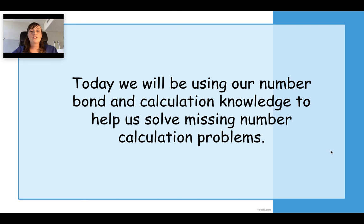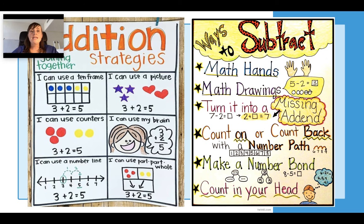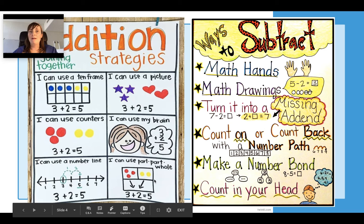Today we're going to be using our number knowledge, number bond knowledge, and calculation knowledge - different ways that we can add and subtract to help us solve problems. So here are the posters similar to the ones I made in class that we always talk about when we do addition or subtraction. When we're adding, we're putting groups together. We could use counters in a 10 frame, could draw pictures, use counters, use your brain to count forwards, use a number line, and you can use place value to add thinking about tens and ones.